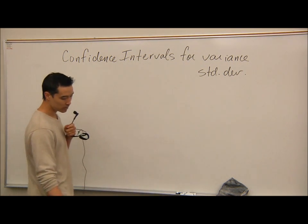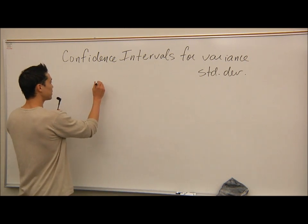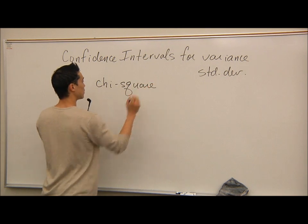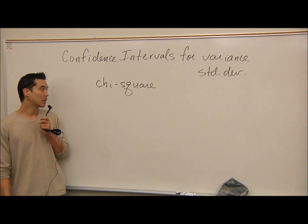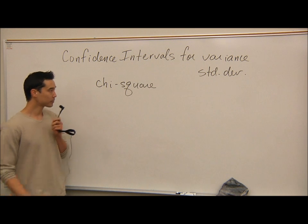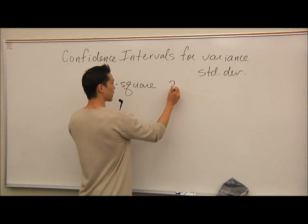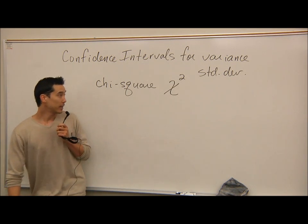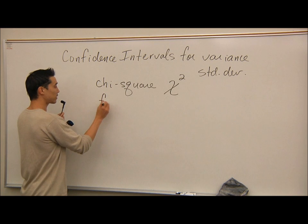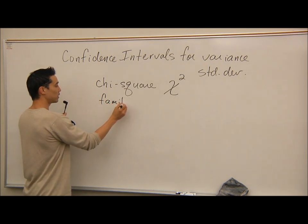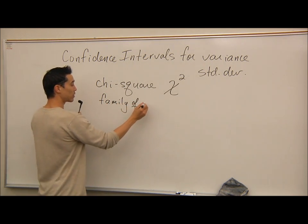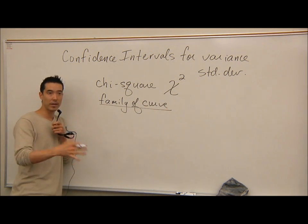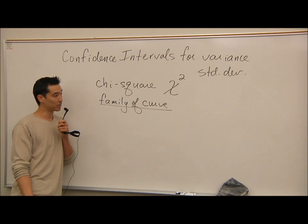We have a completely new distribution to talk about today. It's called the chi-square distribution — spelled C-H-I, but pronounced chi-square. The symbol looks like χ². It is a family of curves distribution, so like the t-distribution, there's not just one curve that fits all. You'll notice when we look at the table, you go down to a certain degrees of freedom depending on your sample size.